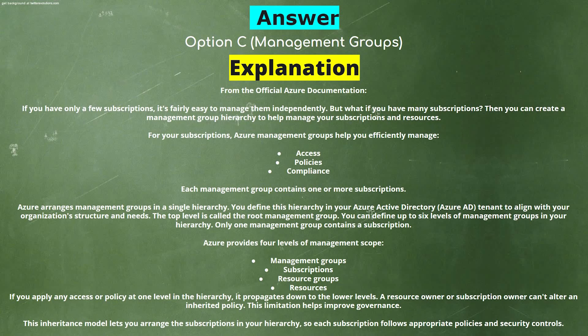Explanation from the official Azure documentation: If you have only a few subscriptions, it's fairly easy to manage them independently. But if you have many subscriptions, you can create a management group hierarchy to help manage your subscriptions and resources. Azure management groups help you efficiently manage access, policies, and compliance. Each management group contains one or more subscriptions. Azure arranges management groups in a single hierarchy you define in your Azure Active Directory tenant to align with your organization's structure and needs. The top level is called the root management group. You can define up to six levels of management groups in your hierarchy, and only one management group contains a subscription.